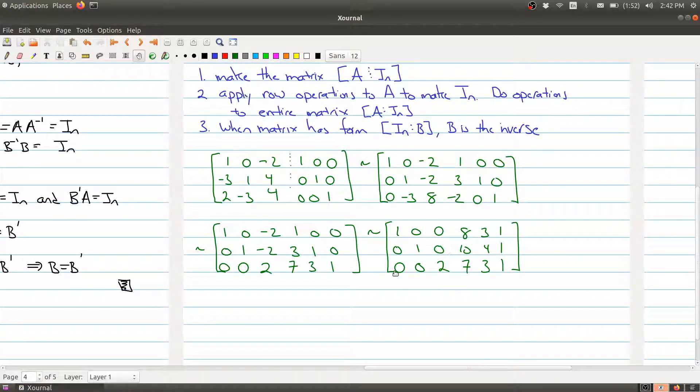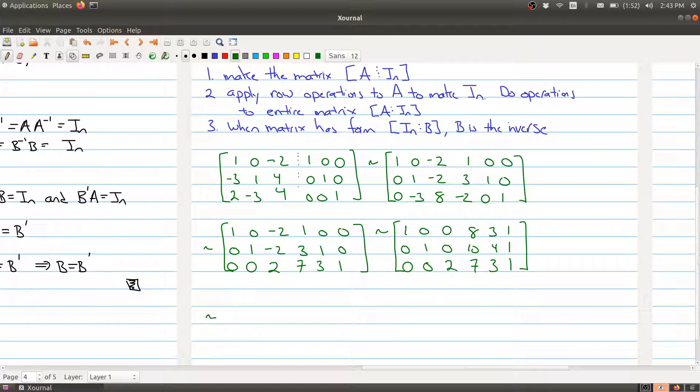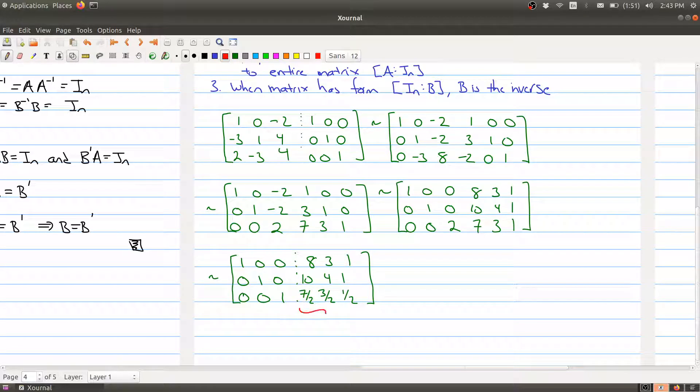So here I would have 0, 0, 2, 7, 3, 1. Then I have 0, 1—so I'm adding the bottom row to the second row—0, 10, 4, 1. Then I'll take the bottom row and add it to the top row: 1, 0, 0, 8, 3, 1. So we're almost there. This almost looks like the identity matrix. The problem is I have a 2 here and normally it should be a 1, so I will rescale that. And I end up with 1, 0, 0, 0, 1, 0, 0, 0, 1—there's my identity matrix. On the other side, I have 8, 3, 1, 10, 4, 1, 7/2, 3/2, and 1/2.